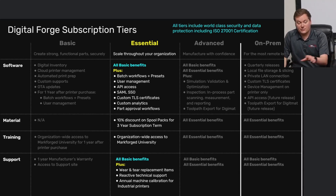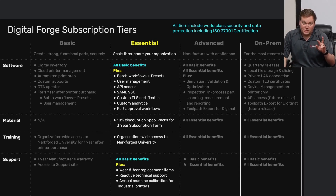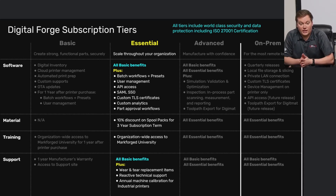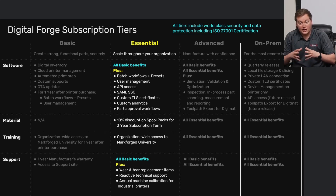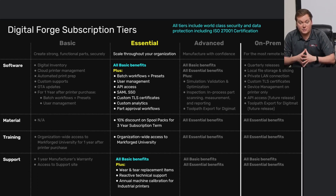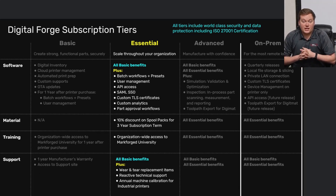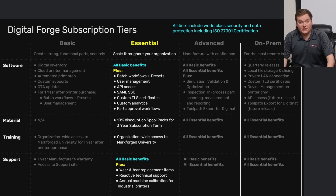Essential is the first tier that offers a material benefit. The subscription comes in one- or three-year options, and with a three-year subscription term you get a 10% discount on your spool packs. For training, Markforge University is available organization-wide for the full length of the subscription — unlimited seats. For support, you get wear and tear replacement items and technical support throughout the subscription length, not just the first year.